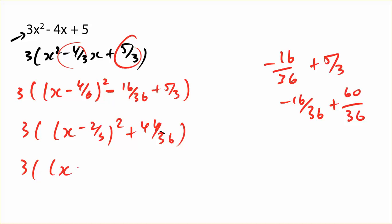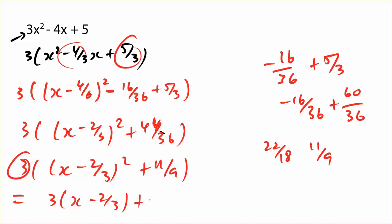Obviously, I can simplify that even further. If I want to find an actual turning point, I need to re-expand this because I've taken 3 outside. So I've got 3, x, 2 thirds, plus 3 times 11 on 9 is 33 over 9.